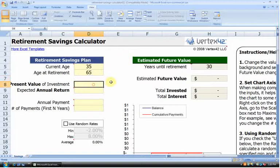Right below that, we have the present value of our current investment. How much do we currently have in our retirement portfolio? I have about $10,000.